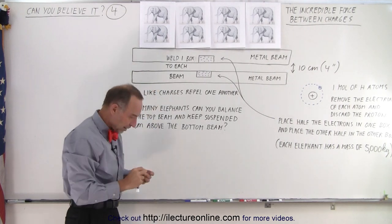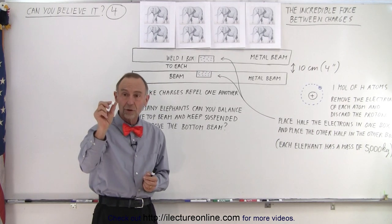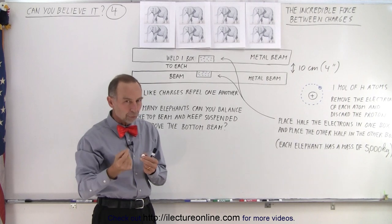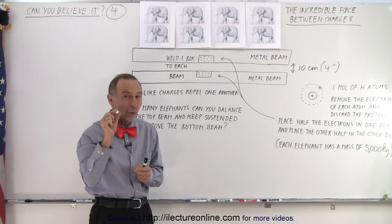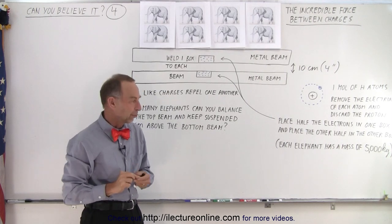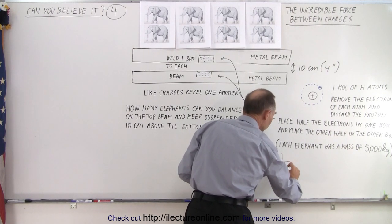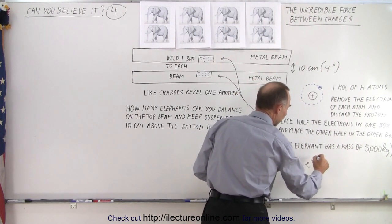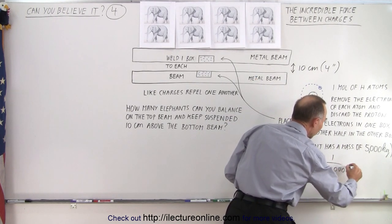If we were to take a gram of hydrogen, one mole of hydrogen is about a gram, it would be about this much hydrogen. So we remove the protons, we keep the electrons. Now the electrons only make up about one two-thousandth of the mass of a gram. So what that means is you would have one two-thousandth of a gram of electrons. And that is one over fifty-thousandth of an ounce.